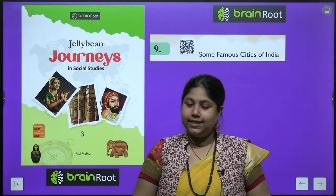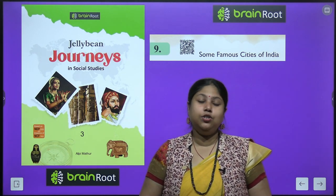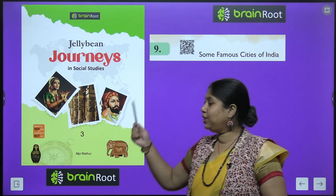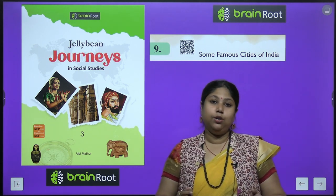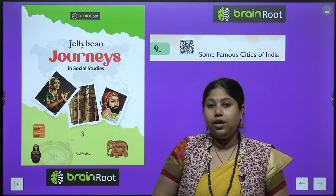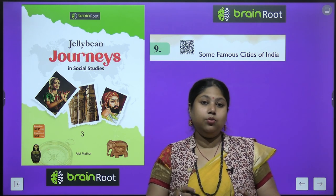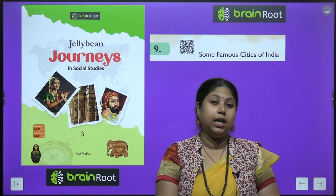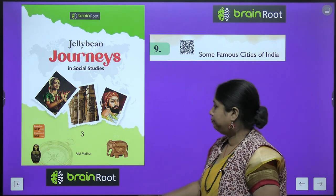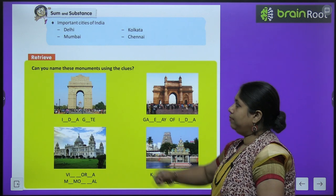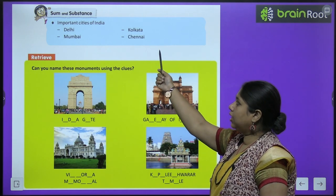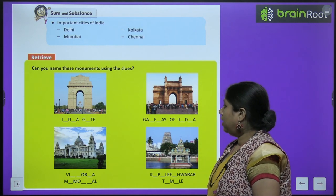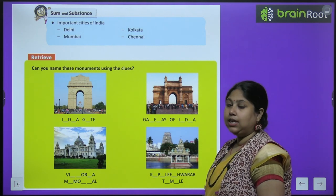Hi kids, welcome to your SST class. Today we are going to start a new chapter of your book - Jellybean Journeys for Class 3 by Brainroot Publications. Today we are going to learn about some important cities of India - India के कुछ major यानी प्रमुख शहरों के बारे में हम पता करेंगे. We will study about Delhi, Kolkata, Mumbai and Chennai - the four major metropolitan cities of India. उससे पहले, we have to do this activity. Let's try.